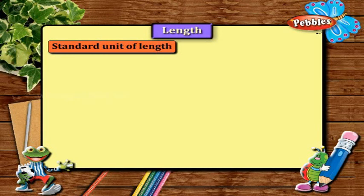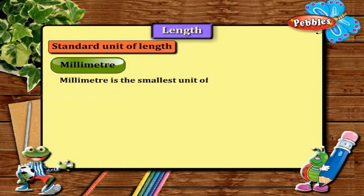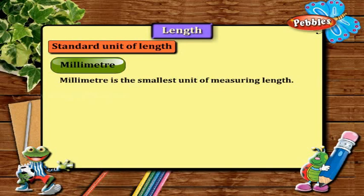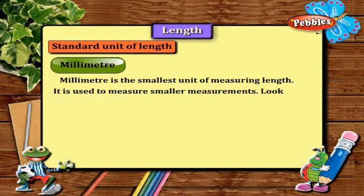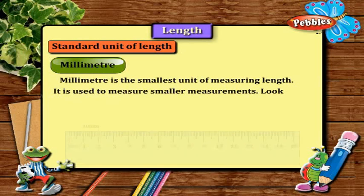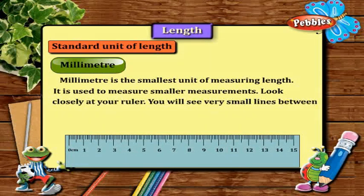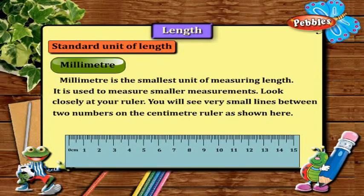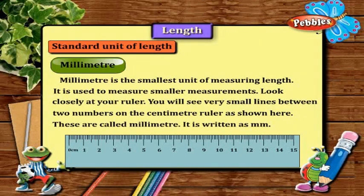Standard unit of length: Millimeter. Millimeter is the smallest unit of measuring length. It is used to measure smaller measurements. Look closely at your ruler. You will see very small lines between two numbers on the centimeter ruler as shown here. These small lines are called millimeters. It is written as mm.